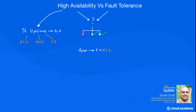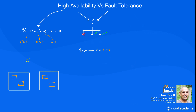Then we could architect our infrastructure like this. Within a region, we could use two different availability zones, and in each availability zone we could have two EC2 instances, which are all associated with an elastic load balancer.